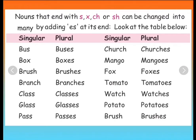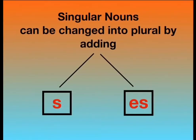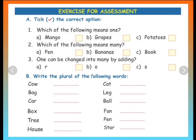Students, you see that we are adding ES at the end of the words to make it plural. The spellings don't change. Only we add ES in the end. So students, we learnt that singular nouns can be changed into plural by adding S and ES. Very good. Let us do some exercises based on the lesson.